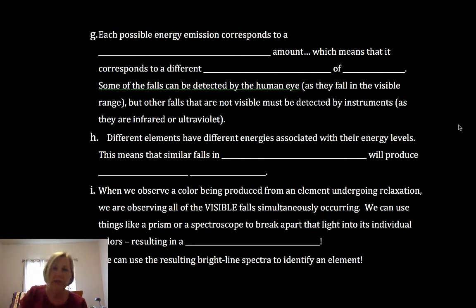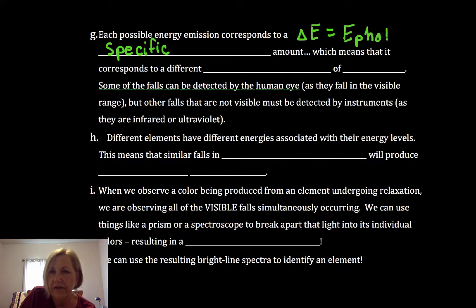So each possible energy emission corresponds to a specific amount of energy. So I've got a difference in energy, delta E equals E, and that's going to correspond to a very specific energy of a photon.